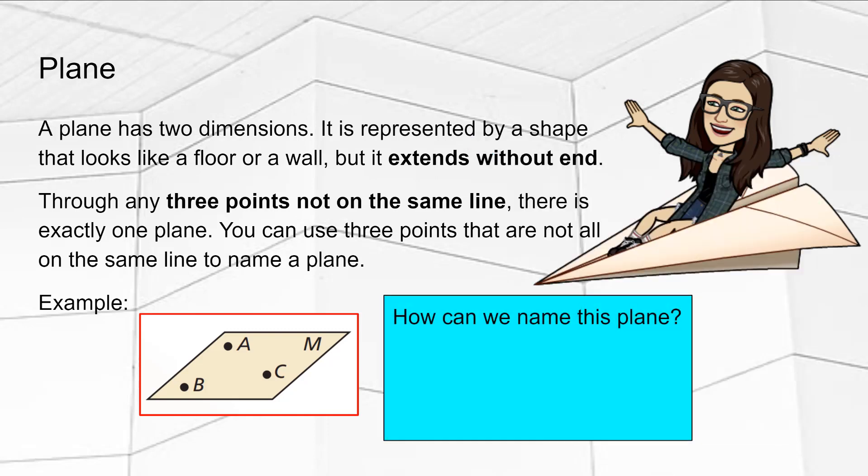How can we name this plane? Notice that M is not a point because there is no point next to M. So it looks like M could be a way that we name this plane, calling it Plane M. That only works if M is labeled on the plane, not representing a point on the plane.